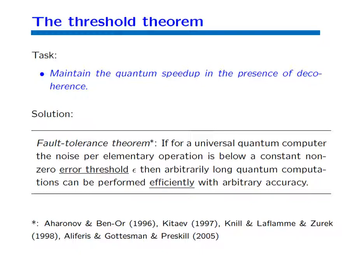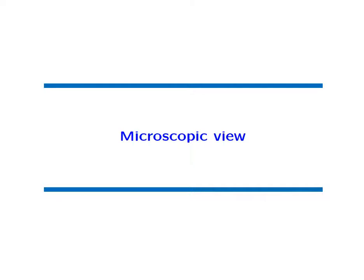The question is how this theorem is implemented in the particular architecture of computing with 3D cluster states. An important question is what the threshold value is — the theorem only says a threshold exists. If that number were 10 to the minus 50, the theorem would be nice but without practical consequence. On the other hand, if the threshold value is something like one-tenth or one-hundredth, it could be compatible with technology. Indeed, threshold values of one percent or even a few percent can be achieved.